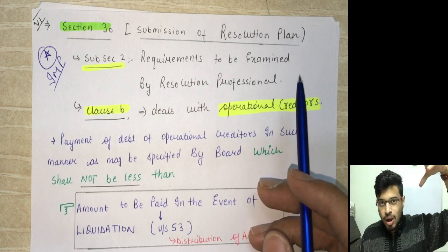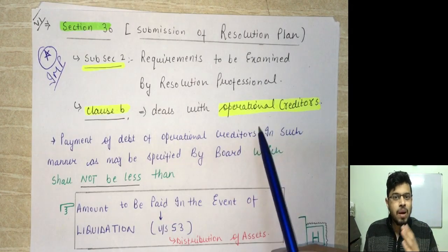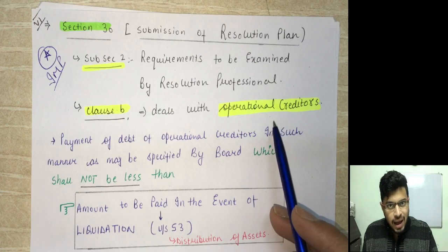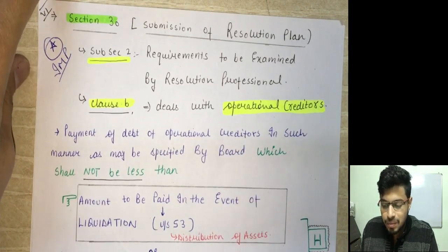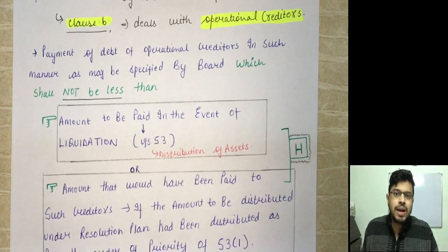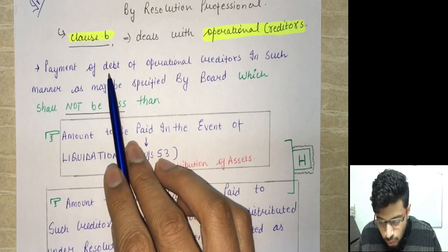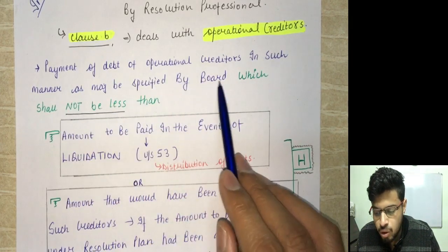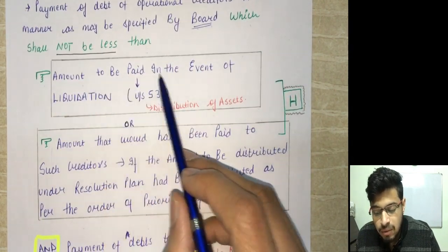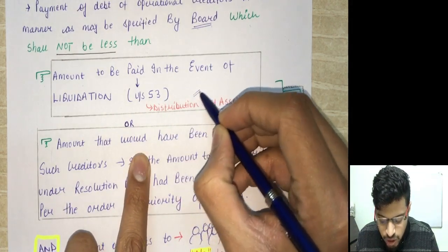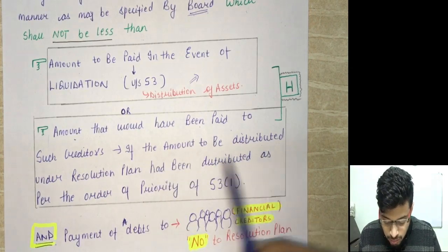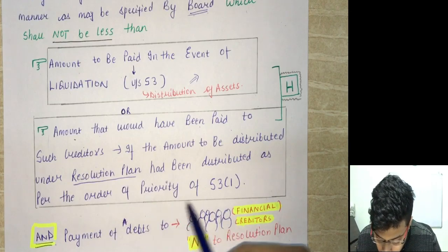The amendment states that payment of debt of operational creditors shall be in such manner as may be specified by the Board, which shall not be less than: (a) the amount to be paid in the event of liquidation under section 53 (the waterfall mechanism), or (b) the amount that would have been paid to such creditors if the amount to be distributed under the resolution plan had been distributed as per the order of priority under section 53 — whichever is higher.